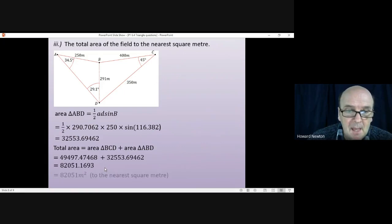When you add those together you get all of this, and then I would round the answer. I think they asked for the answer to the nearest square meter. Yes they did. So that'll be 82,051 meters squared to the nearest square meter.